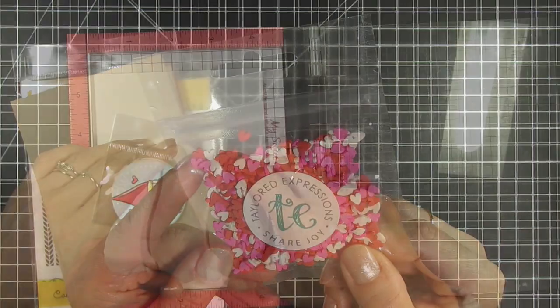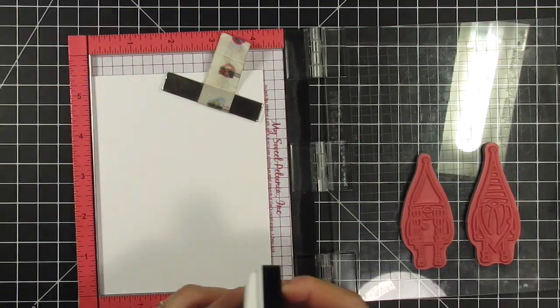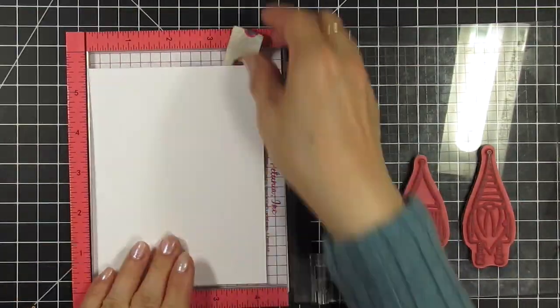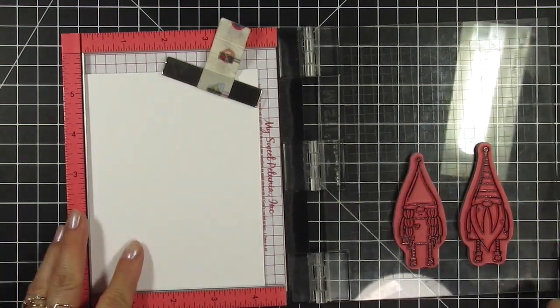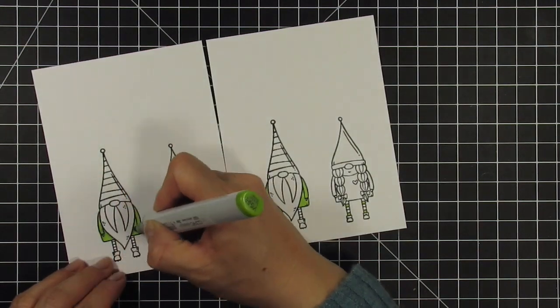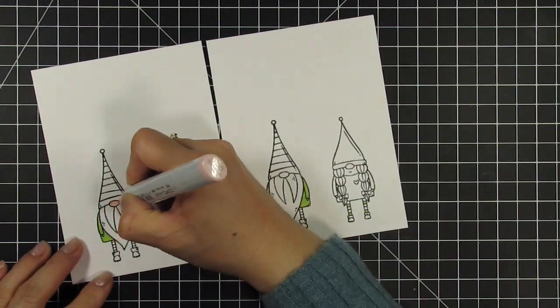The first thing I'm going to do is stamp the gnomes on sugar cube cardstock with Oreo ink. I stamp two sets of these since I'll be using two of them on my card and one each on two separate tags. Then I color the gnomes with Copic markers and I'll put on some music and speed through this coloring process.